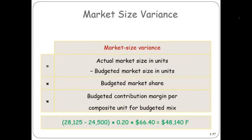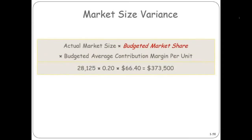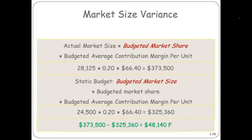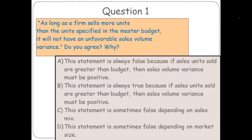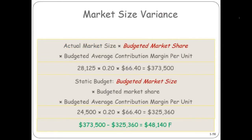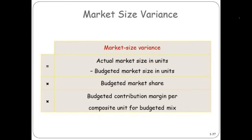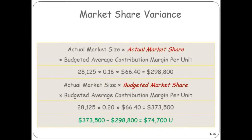So you have the 74,000 unfavorable and the 48,000 favorable — they don't offset each other completely. They add up to your quantity variance, which was a negative 26. This is just another way to get those same numbers: 48,000 favorable and 74,000 unfavorable add up to that result. Going backwards now, 74,000 unfavorable.